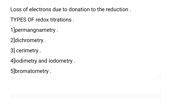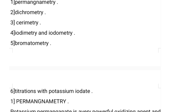Basically there are six types of redox titrations. The most important one is permanganometry, the second is dichrometry, third is cerimetry, fourth is iodimetry and iodometry — remember the difference between iodimetry and iodometry — fifth is bromatometry, and the sixth is titration with potassium iodate.